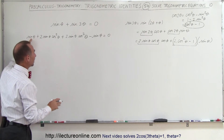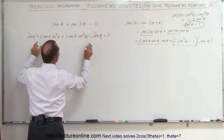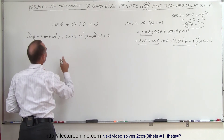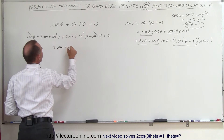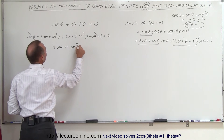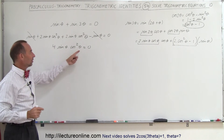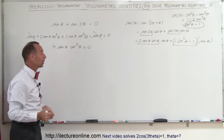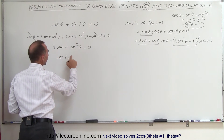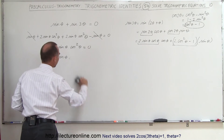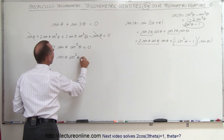Now at first you might wonder where to go from here, but if you look carefully, notice we have a sine of theta and a minus sine of theta — those cancel out. And the two remaining terms are exactly the same, so we can write this as 4 times sine theta times cosine squared theta equals zero. We can divide both sides by 4 to get sine theta times cosine squared theta equals zero.